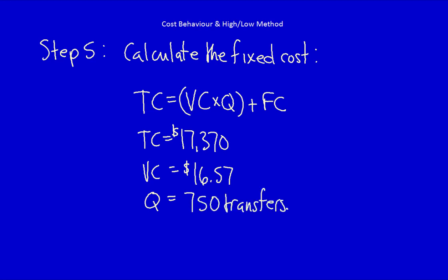I'm now going to substitute all those numbers into my formula. $17,370 is equal to $16.57 times 750 transfers plus fixed costs. Solve for the fixed costs.